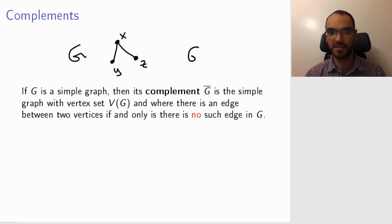So, in this case, G bar will be same vertices, X, Y, and Z. And now the edge goes between Y and Z, because that's where I had a missing edge in G, so to speak. That is the complement of the graph.